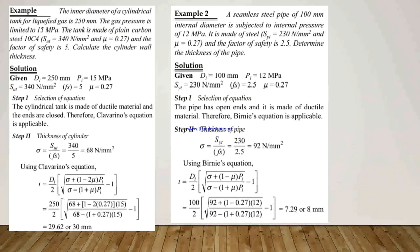Next, we see one example related to how to select the equation and calculate the cylinder's dimensions. The inner diameter of the cylinder tank of a liquefied gas is 250 mm and the gas pressure is limited to 15 MPa. The tank is made of plain carbon steel with ultimate strength equal to 340 N/mm² and mu equal to 0.27. The factor of safety is 5. We have to calculate the cylinder wall thickness. Given data: di = 250 mm, pi = 15 MPa, ultimate strength = 340 N/mm², factor of safety = 5, mu = 0.27.